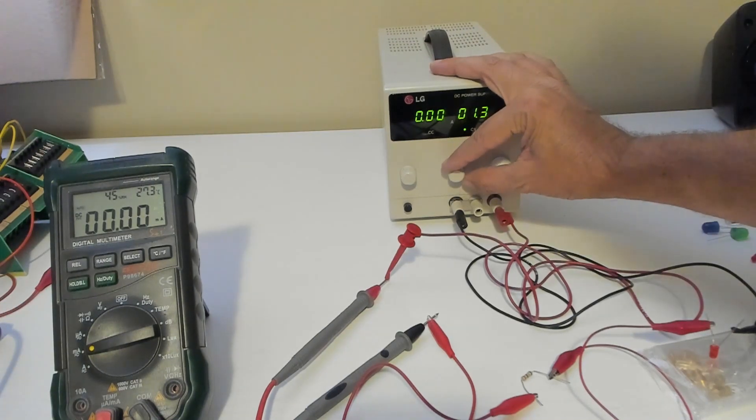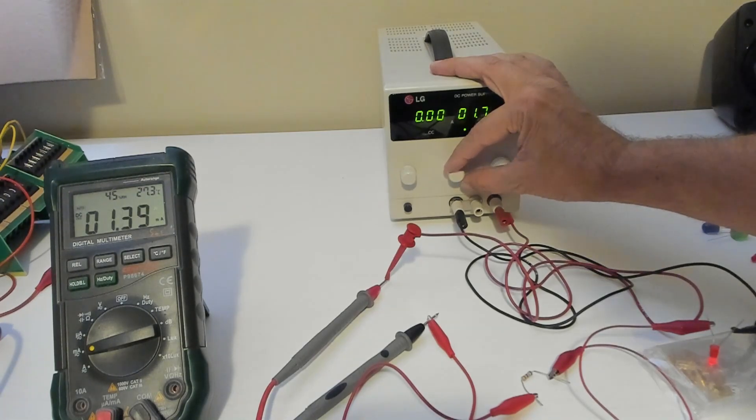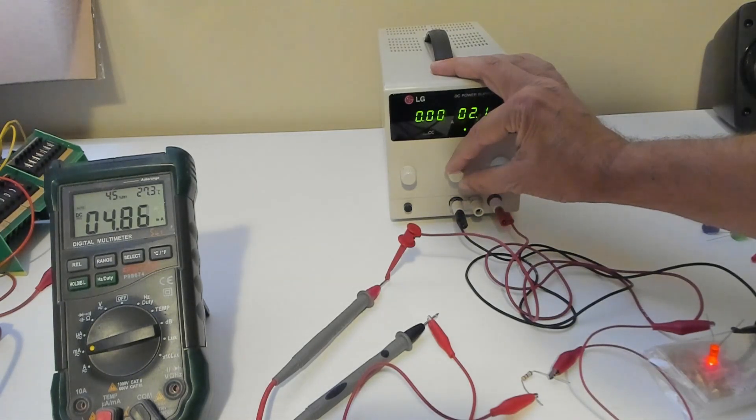So now I'm going to slowly turn the voltage up and we're at 1.3, 1.5 volts, 1.6 volts. We're starting to see one milliamp on the other meter, 1.8 volts. We're at two milliamps, 2 volts, we're at about 4 milliamps.